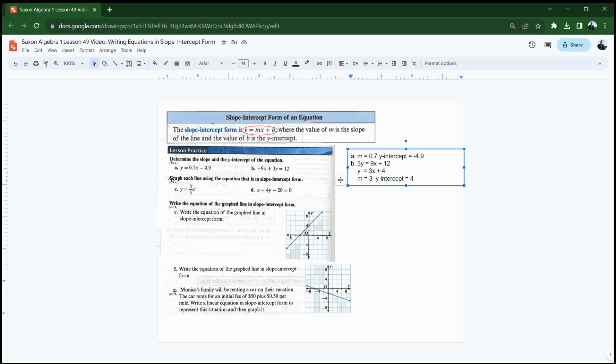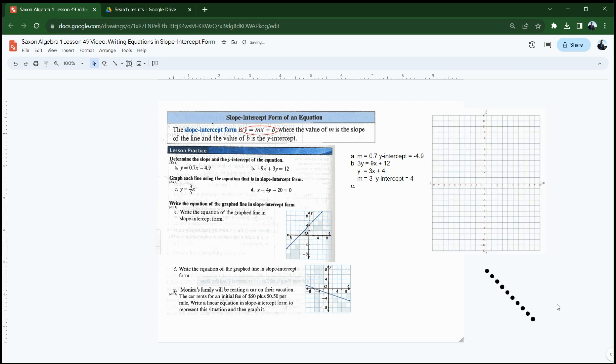All right, now the next step asks me to graph each line using the equation that is in slope-intercept form. C is in slope-intercept form. D, I need to rearrange and put it in slope-intercept form first. All right, let's take a look at C. Okay, so here I have a graph and a bunch of points that I can put on the graph. And I need to graph the line y equals 3 over 5x plus 0. Okay, there's no plus 0 here, but we can assume there's a plus 0.